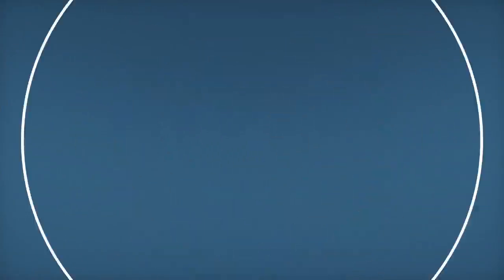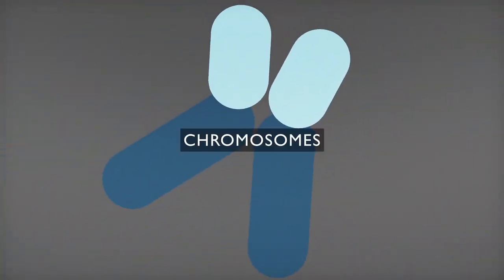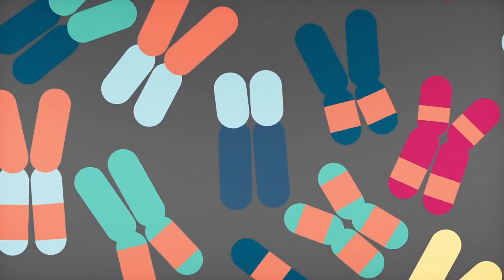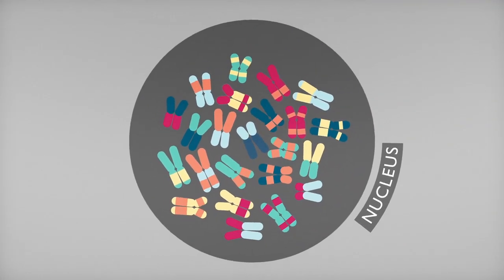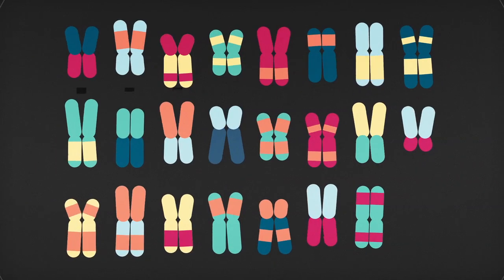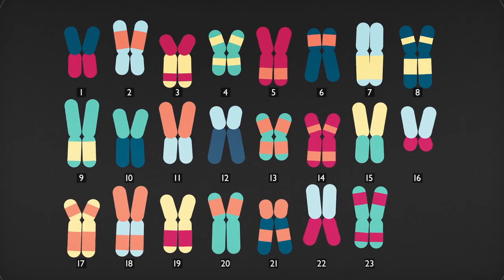DNA folds into paired packages called chromosomes that are stored in the nucleus of the cell. Different species have different numbers of chromosomes. Humans have 23 pairs.